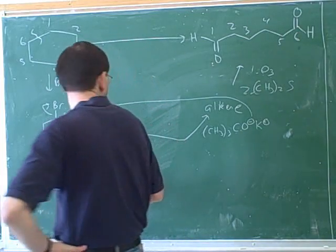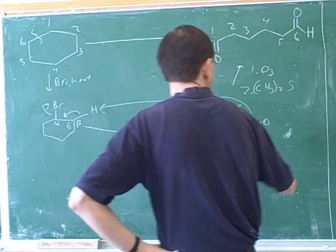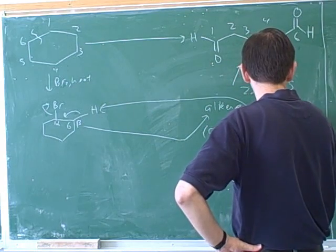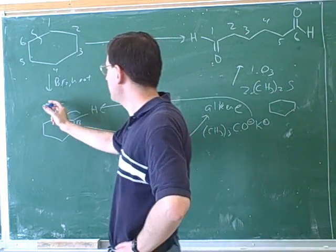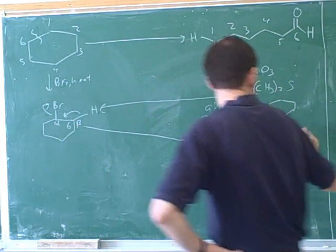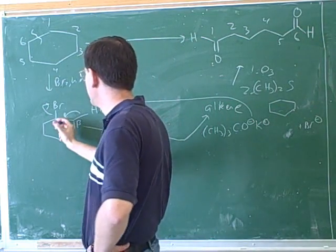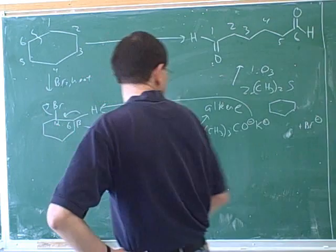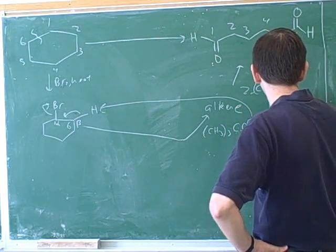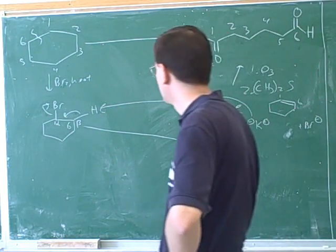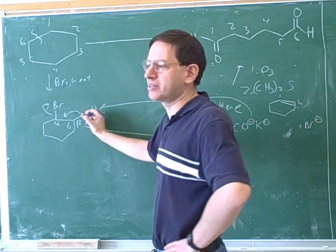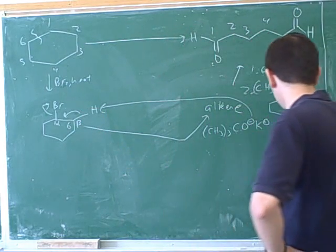And now that we have the arrows, we should be able to draw what our next intermediate is going to be. So the bromine is going to leave, and it's going to have a negative charge. We've formed a new pi bond between the alpha carbon and the beta carbon. And our bulky base has picked up a proton, if you want to draw that too.